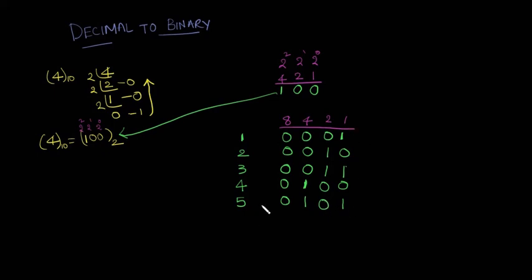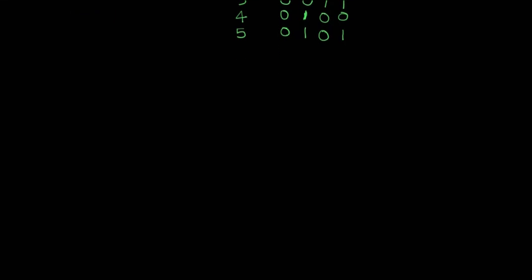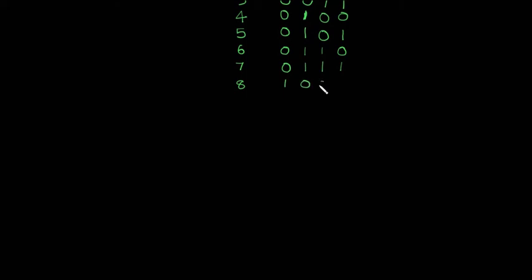Similarly for 6: 8 is 0, 4 plus 2 gives 6, so the bits are 0 1 1 0. For 7: 4 plus 2 plus 1 gives 7, so the bits are 0 1 1 1. For 8: we already have 8 in the weights, so just put a 1 there and remaining 0s. We can continue up to 15: 15 is all 1s — 8 plus 4 is 12, plus 2 is 14, plus 1 is 15, giving 1 1 1 1.